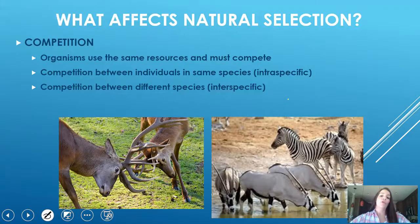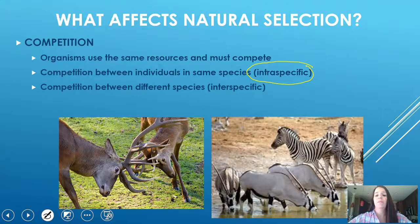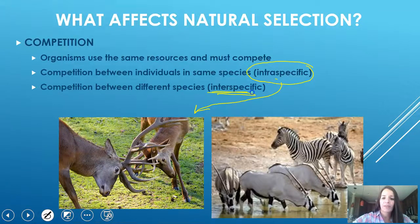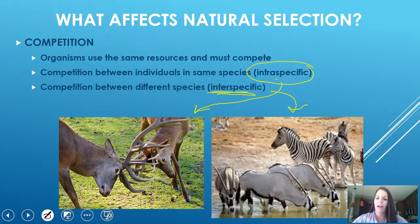Organisms are always competing for resources, whether food, territory, water, or shelter. There are two types of competition. Intraspecific competition is between individuals of the same species — for example, two bucks fighting for territory or access to mates. Interspecific competition is between different species — think of African watering holes where different species compete for a safe spot and access to water, with predators also present.